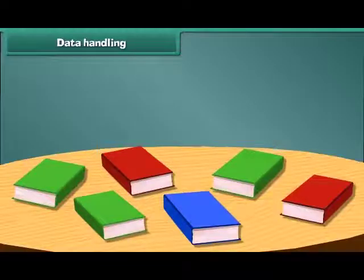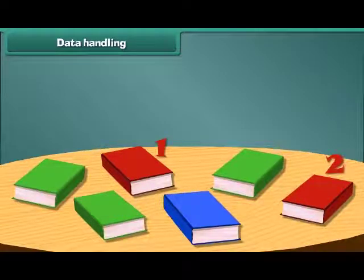Friends, now let's count and arrange these books in the bookshelf. How many red colored books are there? 1 and 2. There are 2 red books.